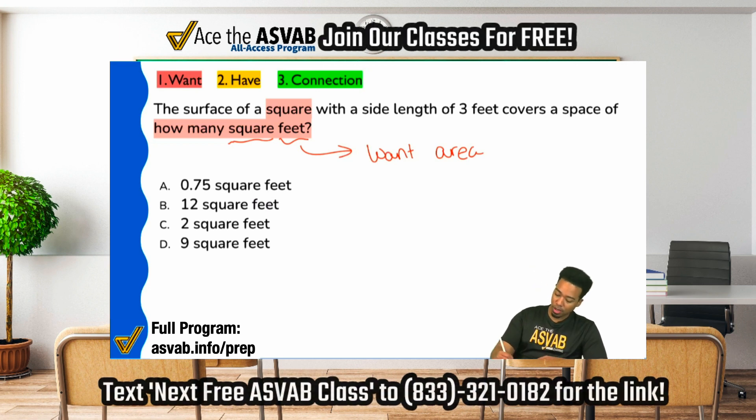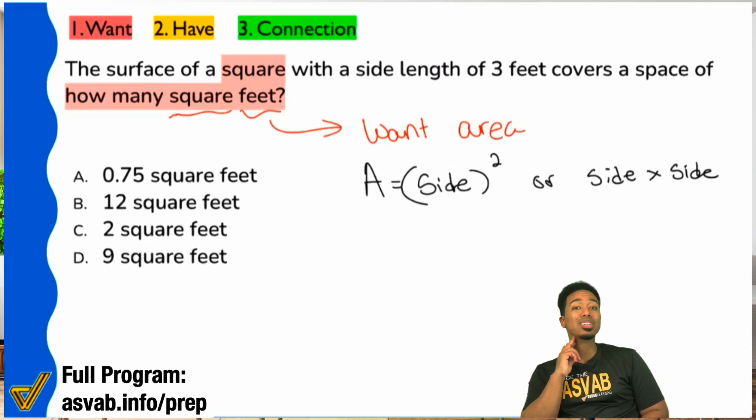So the area of a square, the formula is the side multiplied by the side, or you could just say side squared. Either way. Side times side or side squared.